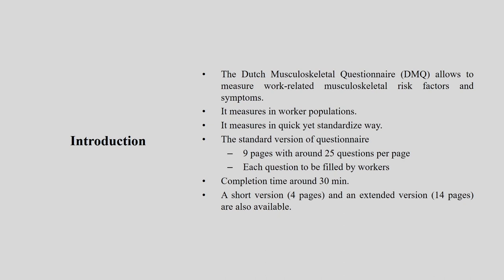The standard version of the questionnaire has two versions: one is a short version and another is a large version. The standard version is 9 pages with around 25 questions per page, and it may take around 30 minutes to complete. The short version is only 4 pages, and the extended version is 14 pages.